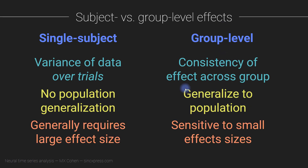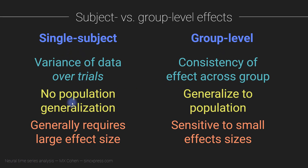Group level analyses allow you to generalize to other individuals. Finally, within-subjects analyses generally require a large effect size because the variance at the single trial level tends to be relatively large. To get statistically significant effects within an individual you need either very small variance or a very large effect size. In contrast, group level statistical testing tends to be more sensitive to small effect sizes, because we focus on the means across subjects. As long as you have enough trials, the mean will still go in the right direction, and at the group level single-subject variance gets ignored in favor of consistency across individuals.